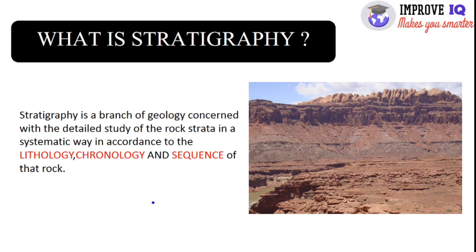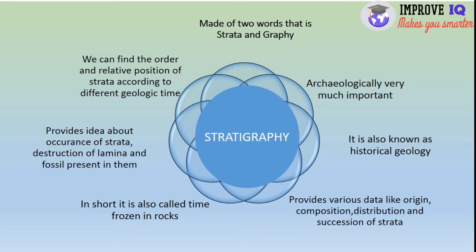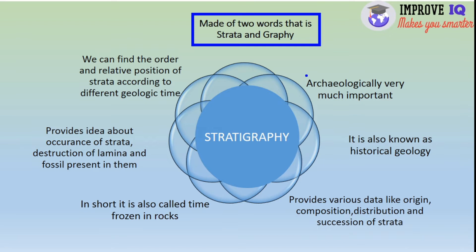So what is the definition of stratigraphy? Stratigraphy is a branch of geology concerned with the detailed study of rock strata in a systematic way in accordance with the lithology, chronology, and sequence of that rock. The word stratigraphy comprises two words: strata and graphy. The word strata refers to layers or lamina, and this lamina makes the complete lamination for the bedding plane of rock. Hence we can also define stratigraphy as the systematic study of strata, layers, or lamina of rocks.